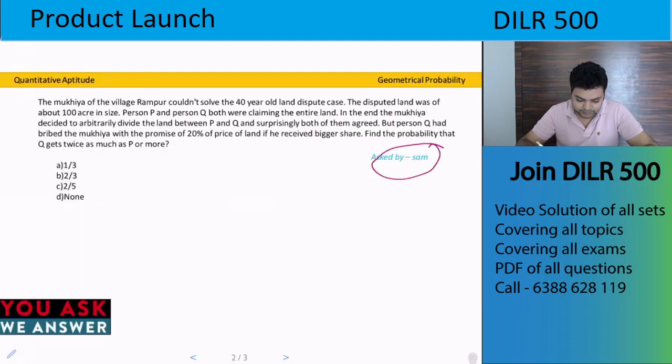Asked by Sam. Question is: The mukhiya of the village Rampur couldn't solve the 40 year old land dispute case. This disputed land was about 100 acres in size. Person P and person Q both were claiming the entire land. In the end, the mukhiya decided to arbitrarily divide the land between P and Q and surprisingly both of them agreed.